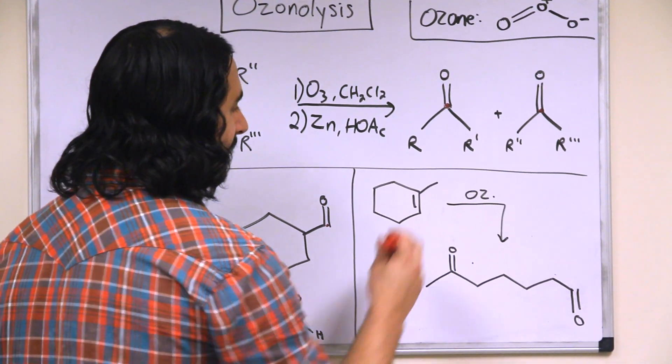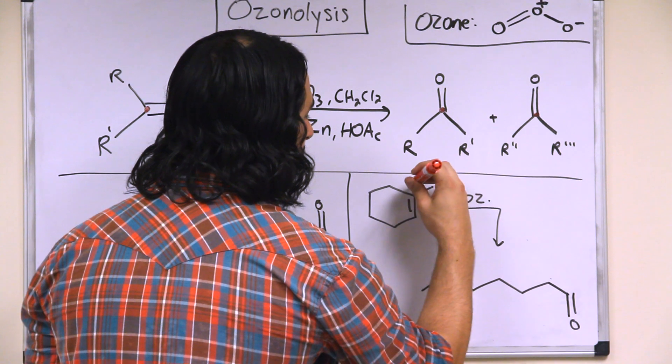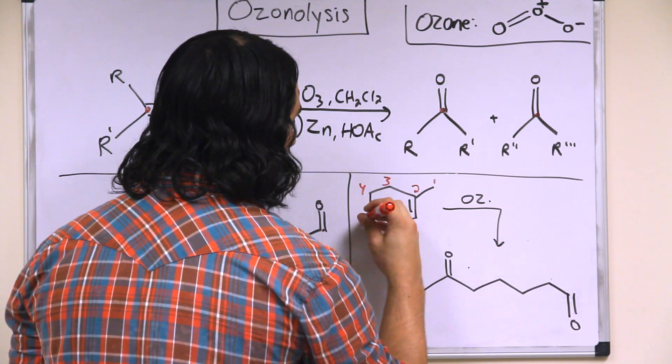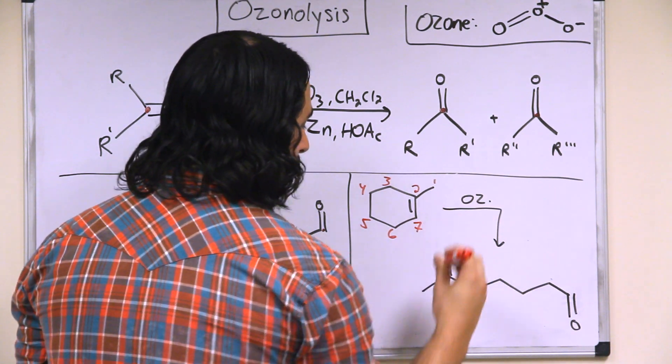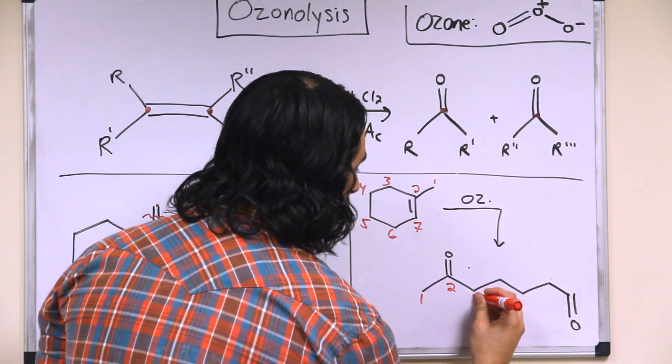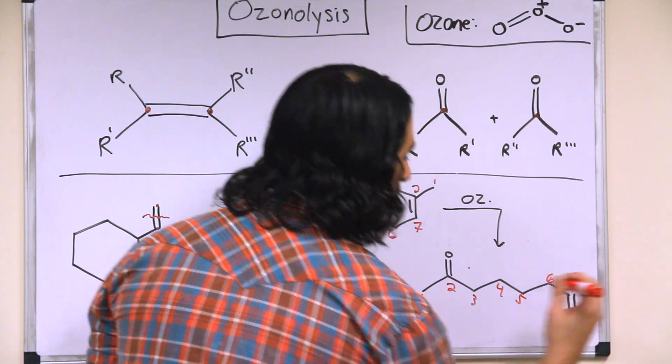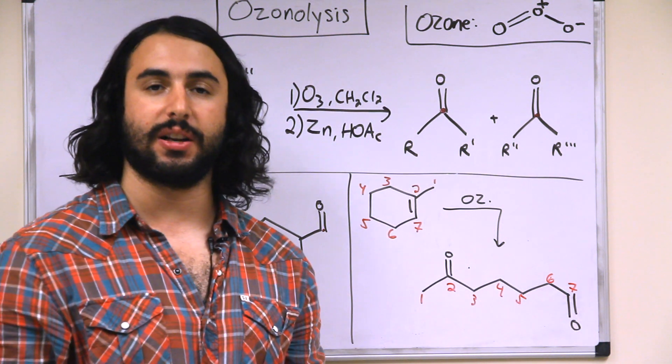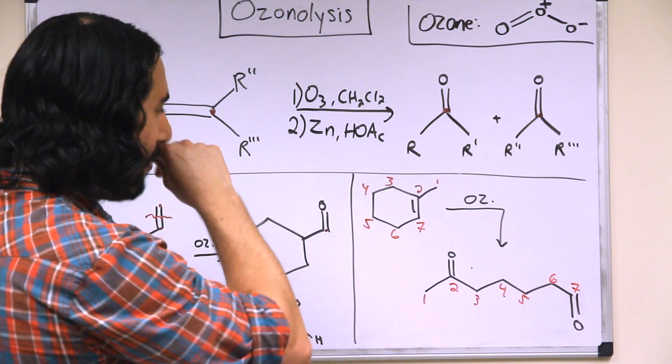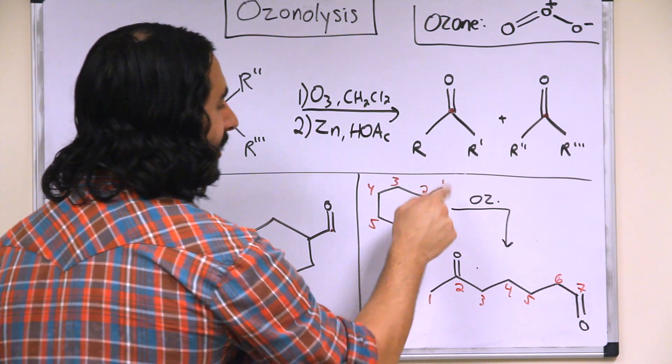So here, this is useful to number sometimes when we have cyclic structures like this. We want to take these seven carbons, and it's very easy to draw an incorrect product if we don't do something like numbering the carbons.